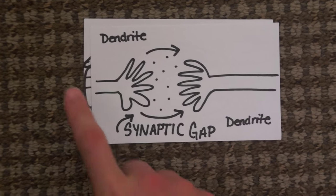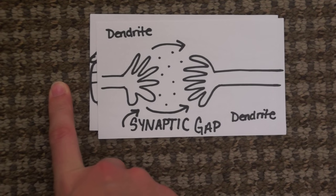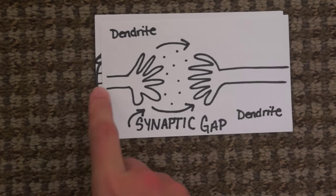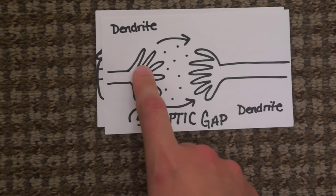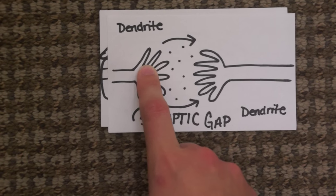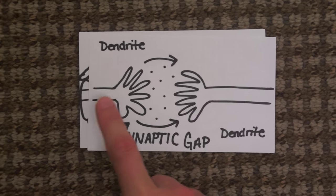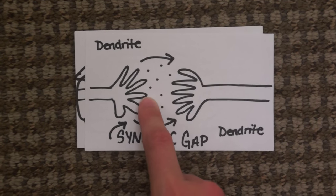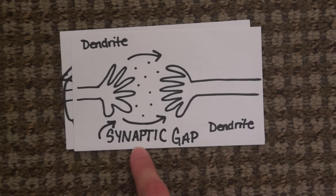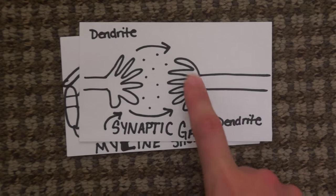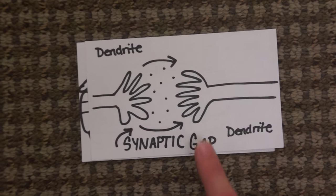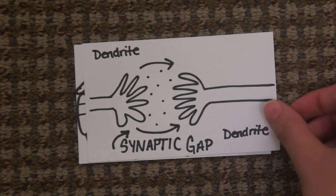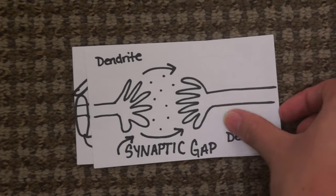What happens is a neuron will get the signal, send it through the axon and take it to the dendrite, and the dendrite will then send the electric pulse across the synaptic gap to another dendrite that's linking the idea.